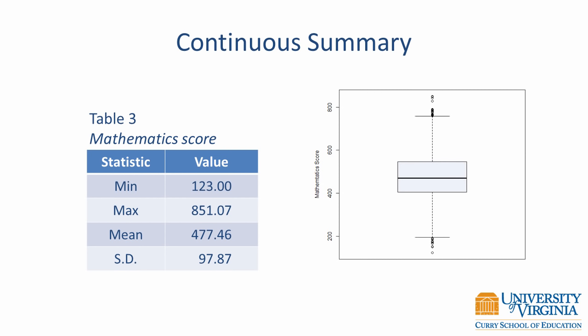A box plot is an alternative and more robust way to illustrate a continuous variable. The horizontal lines have specific meaning: the center of the distribution is noted by a thick line at the 50th percentile. Variability is represented by a box formed by marking the first and third quartile — this box depicts the interquartile range. Whiskers extend from the box to the lower and upper fence. When there are no outliers, the lower and upper fence are the minimum and maximum values respectively.